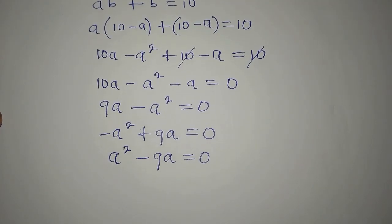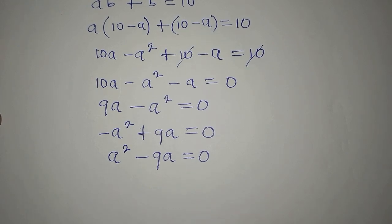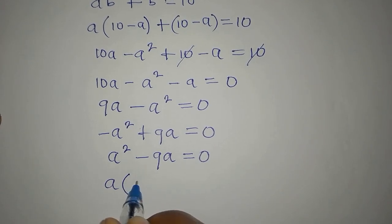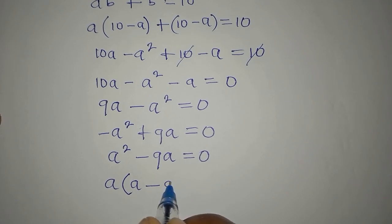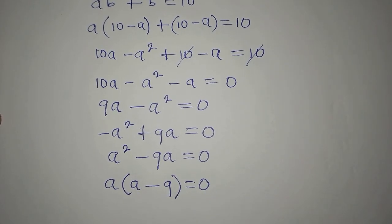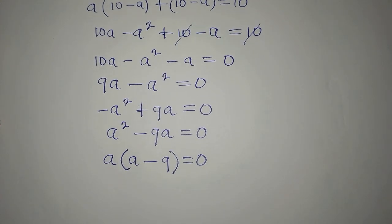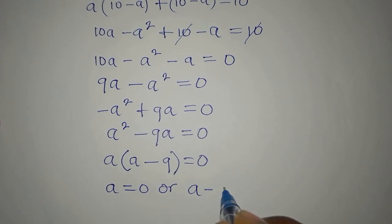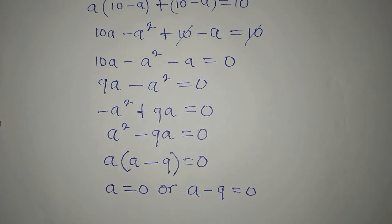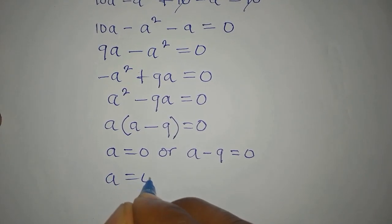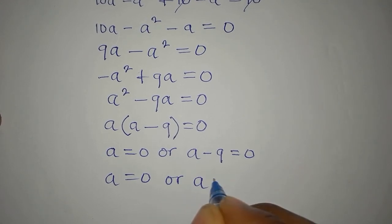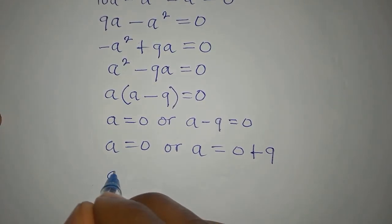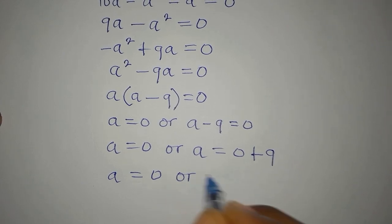We now have a quadratic equation and can solve it by factorization. A is common, so we get A times (A minus 9) equals 0. Applying the zero product rule, either A equals 0 or A minus 9 equals 0, giving us A equals 0 or A equals 9.